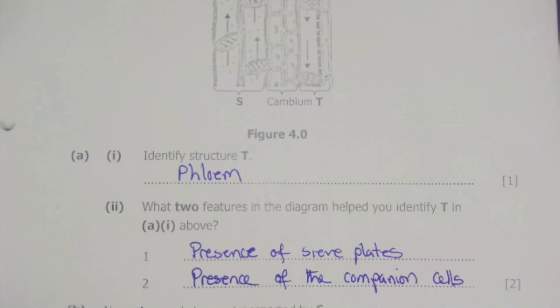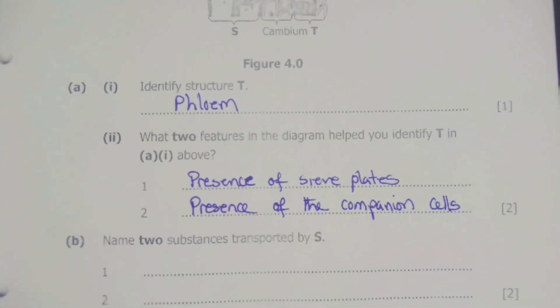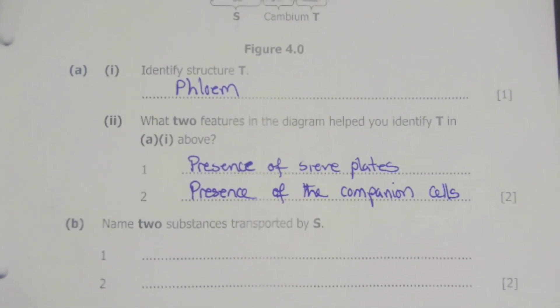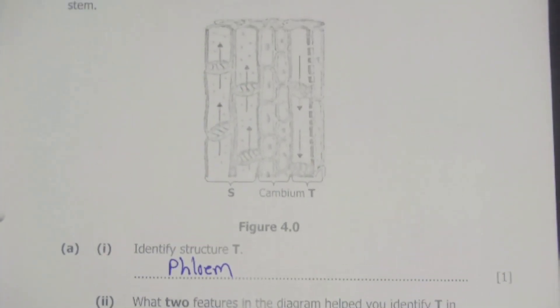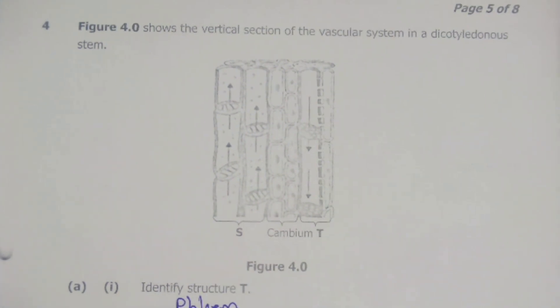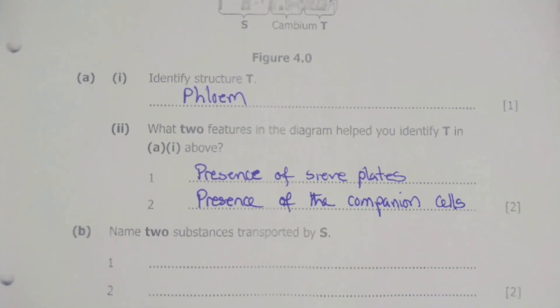We can move on to the next question. The next question is B and it is asking us to name two substances transported by S. So structure S is simply the xylem vessels.